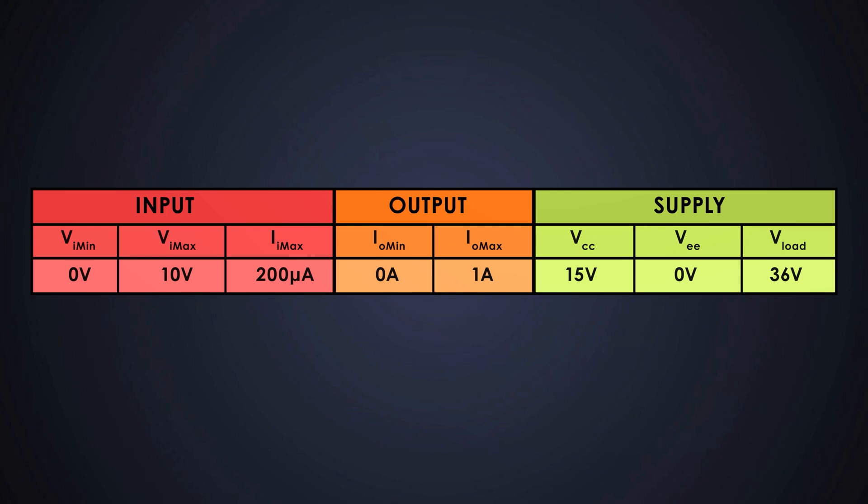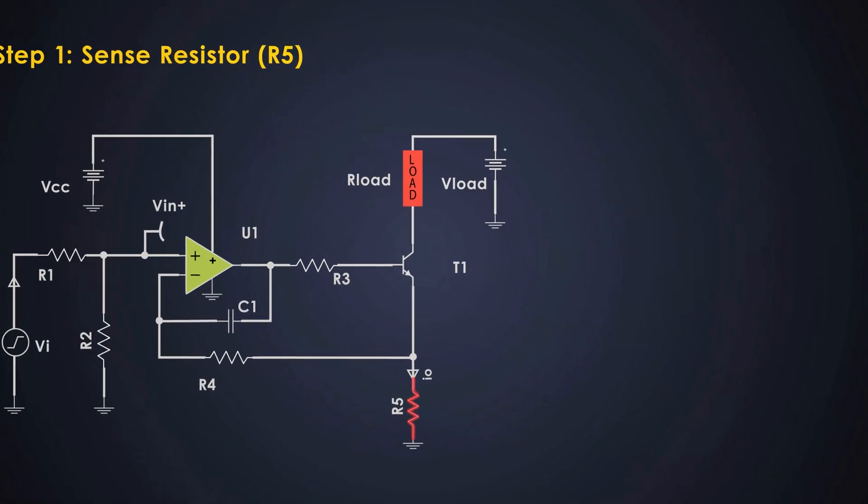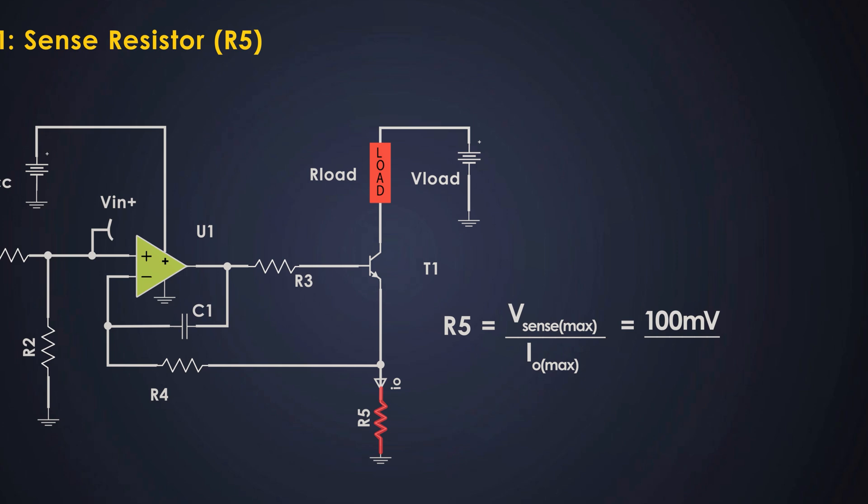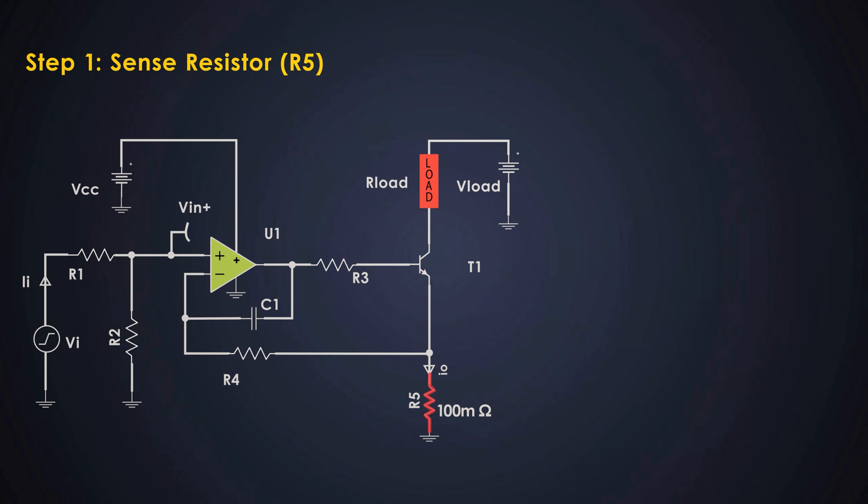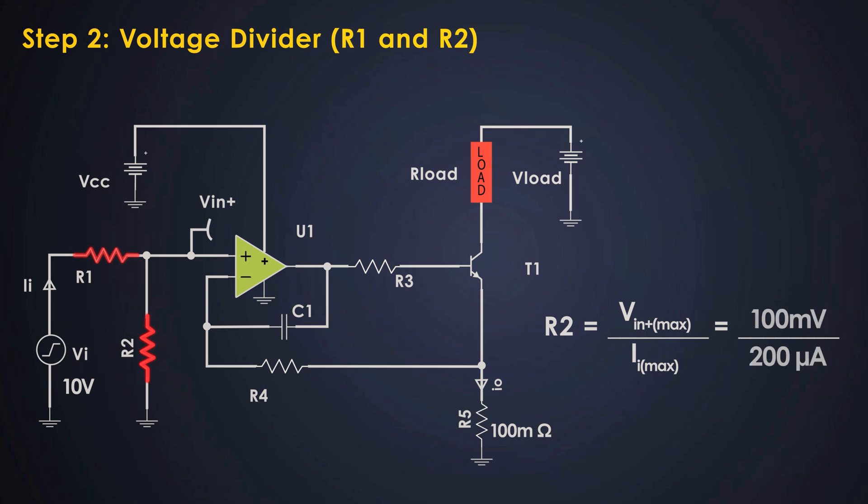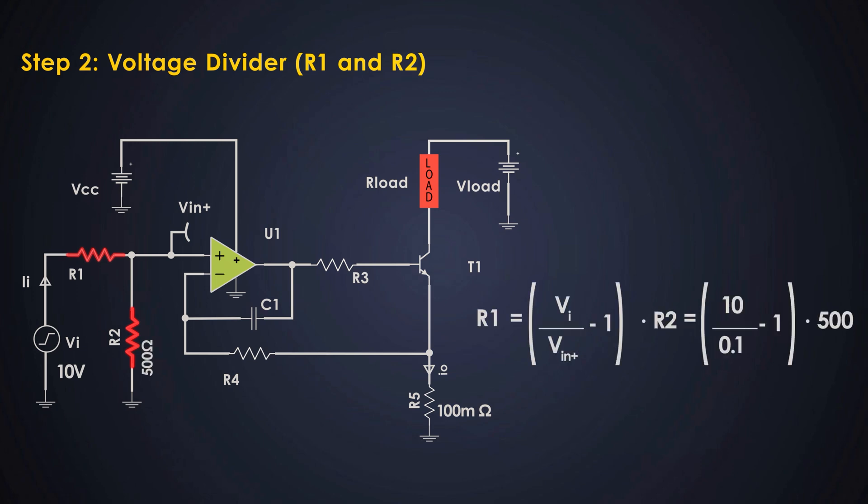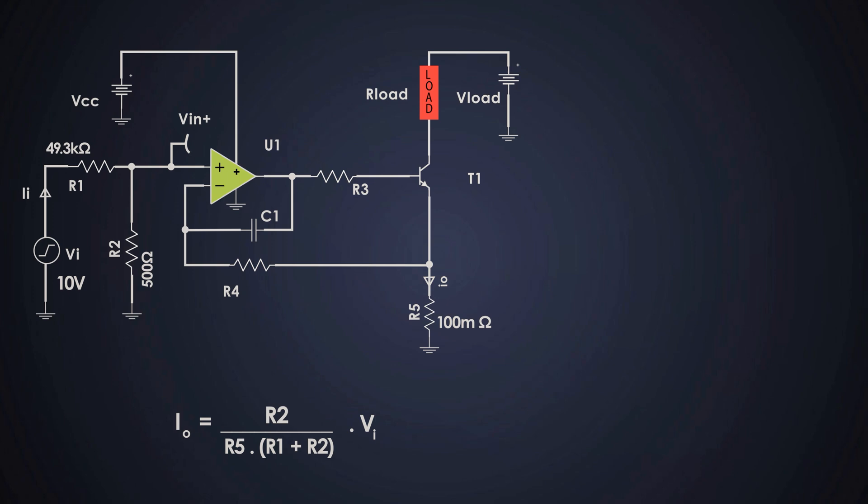Now let's go through the calculations one by one. We want a maximum of 100 millivolts across the sense resistor when output current is around 1A. This keeps power dissipation and compliance voltage drop low. This resistor converts output current into a measurable voltage. Now we select R1 and R2 so that the input voltage is scaled down to 100mV at the Op-Amp input. The input current through the divider must be less than 200 microamps. So first we solve for R2, which will be around 500 ohms. Now we calculate R1 using this. So we use R1 as 49.3 kiloohms. The final transfer function for this circuit becomes like this. Plugging in actual values, so a 0 to 10V input directly produces 0 to 1A output current.